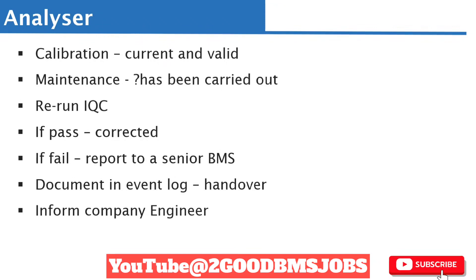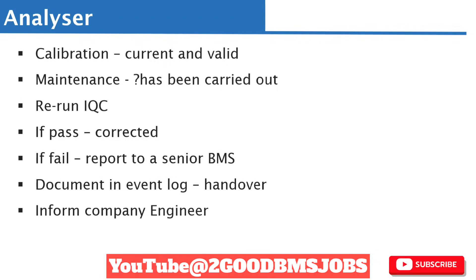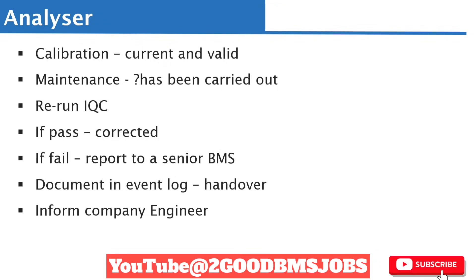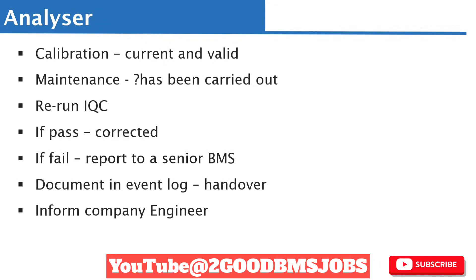Each analyzer has channels, and it's possible that a blood clot can block a channel, or there can even be bacterial growth on the channel that contaminates it and affects the quality control result. That is why maintenance involves flushing and washing the channels, and doing background checks to ensure nothing will interfere with the result. If maintenance fails, there may be an underlying cause that needs to be sorted out. Once maintenance and calibration pass, you can rerun the quality control.